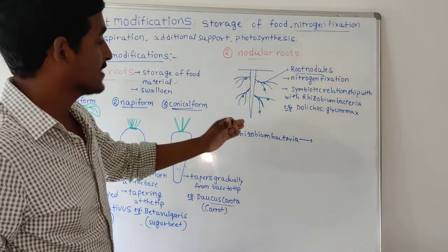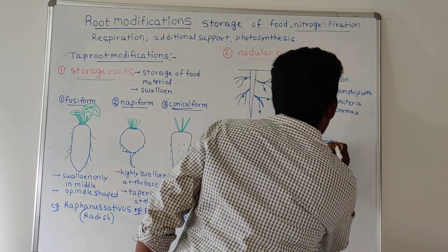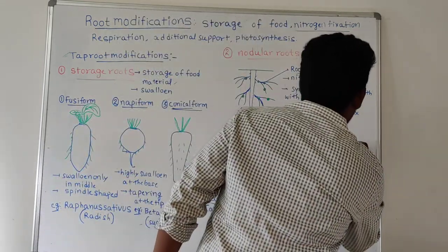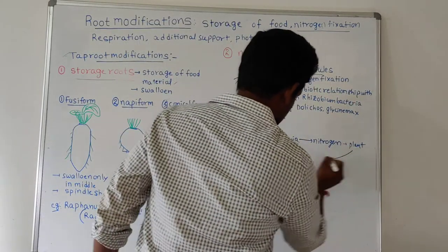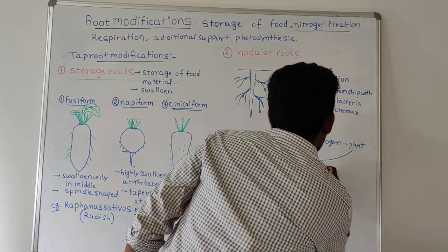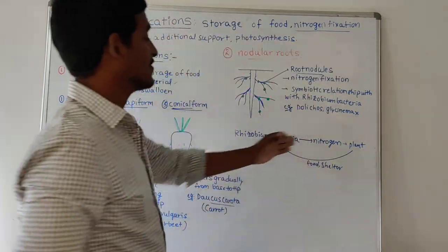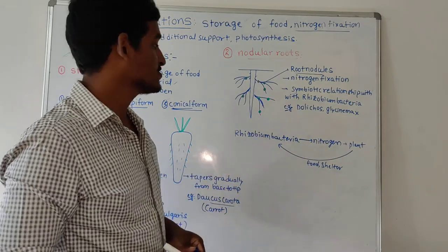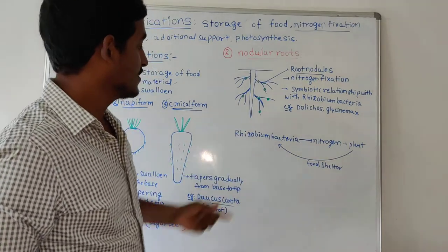Rhizobium bacteria provides nitrogen to the plant, while the plant provides food and shelter to the Rhizobium bacteria. This type of relationship is called a symbiotic relationship. Now let us briefly discuss how nitrogen fixation takes place.